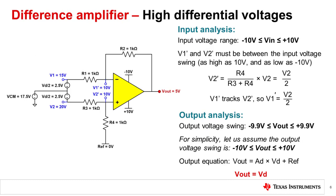Back to this circuit. This amplifier is rail-to-rail in and out. Let us break this analysis down into two categories: input and output. We need to make sure both the input and the output are within linear range. This amplifier's input voltage range is to the rails, or negative 10 volts to positive 10 volts. This input voltage swing is measured at the nodes labeled V1' and V2'. The voltage at V2' is due to the resistor divider formed by R3 and R4, which effectively halves V2, since the reference voltage is grounded and R3 is equal to R4. Since V1' tracks V2', then V1' is also V2 divided by 2. That means V2 can actually be as much as 2 times the supply voltage, or plus/minus 20 volts, and still be within linear range.